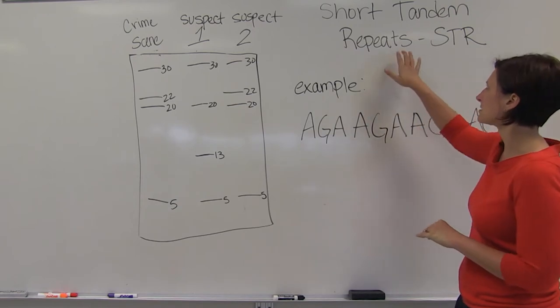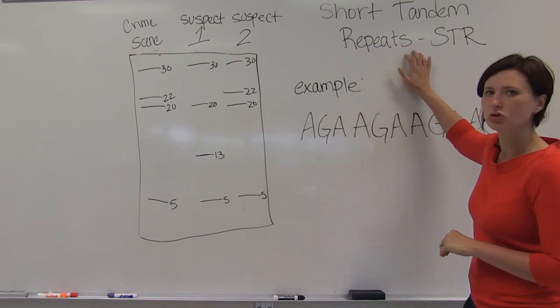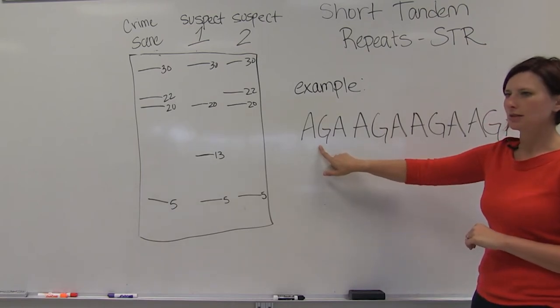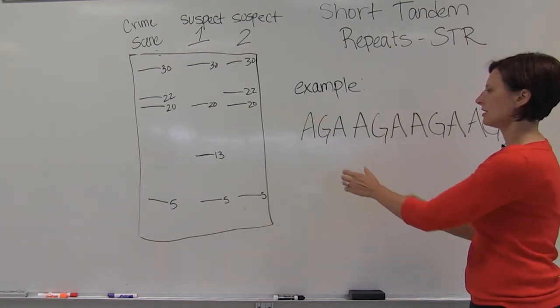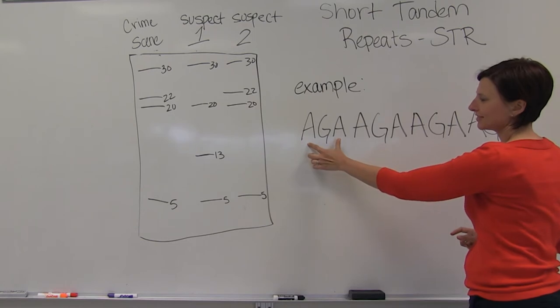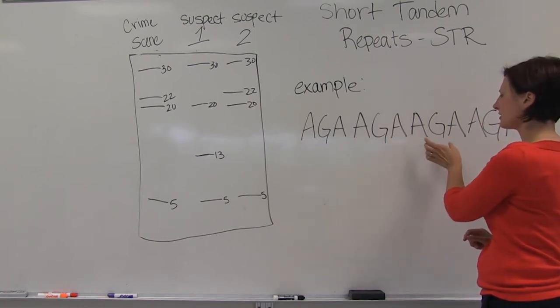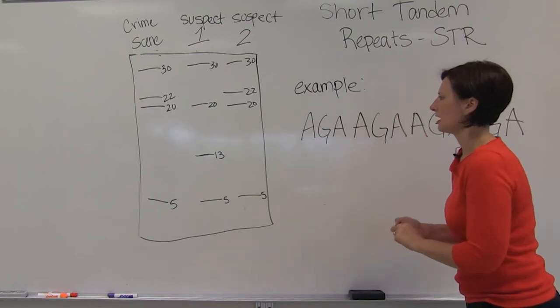The way that they do this is based on sections of DNA called short tandem repeats. This is an example of a region showing short tandem repeats. The repeats are short, A-G-A, tandem, which means they're back-to-back, they're attached, and they repeat.